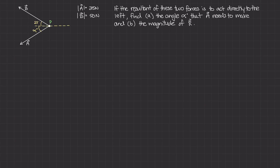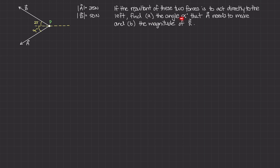The angle that A makes with the horizontal line below that line is angle alpha. The angle that B makes against that horizontal line is 25 degrees. This question is asking: if the resultant of these two forces is to act directly to the left, we need to find A, the angle alpha that A needs to make, and B, the magnitude of R. So there are two different parts to this question.